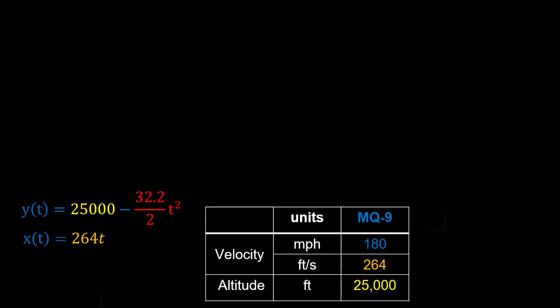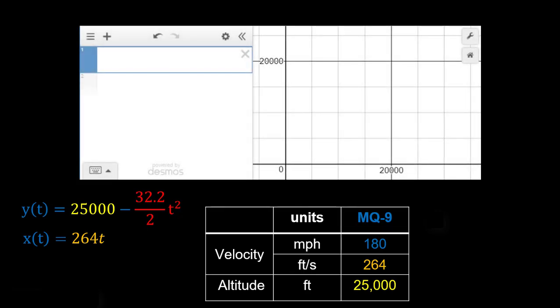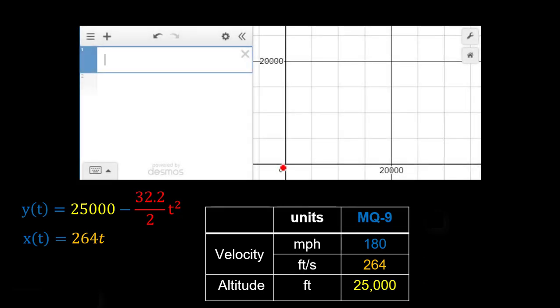All right, now that we've got our X and our Y as a function of T, we can go ahead and do the fun part, which is plotting this out. All right, so let's go ahead and bring up Desmos here. And what we have down here, this horizontal axis would represent our horizontal distance, whereas this vertical axis would represent our altitude. And we can go ahead and plug those in here, so I'm just going to plug in my X of T first, which is just 264 T.